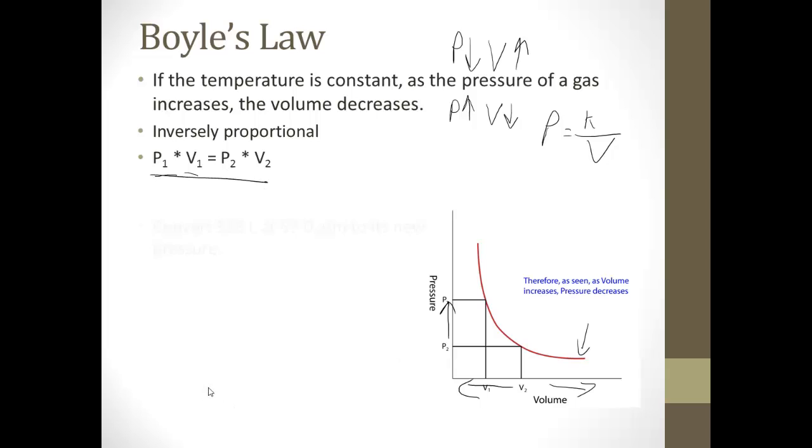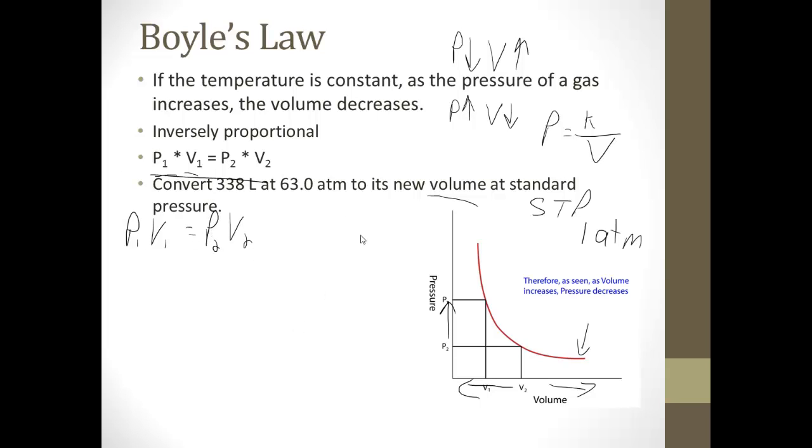So how does this work? Let's say we have to convert 338 liters at 63.0 atmospheres to its new volume at standard pressure. If you look on your reference table, you'll see STP, standard temperature and pressure, is going to be a pressure of 1 atmosphere.